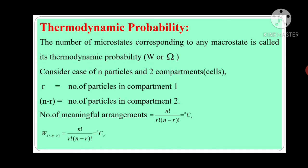Students, what is thermodynamic probability? The number of microstates corresponding to any macrostate is called its thermodynamic probability, and it is denoted by the symbol W or Omega.